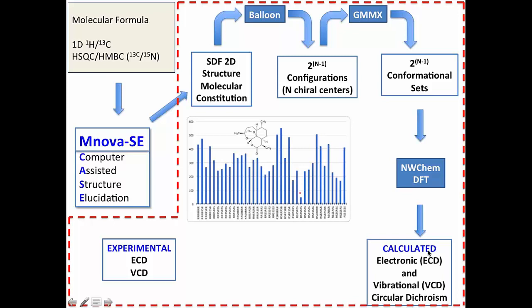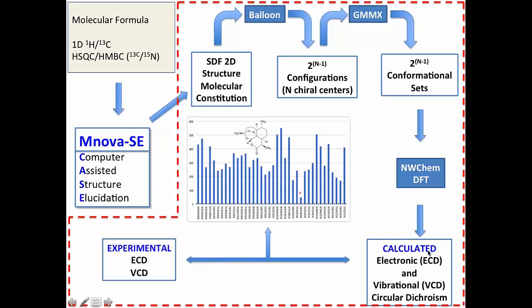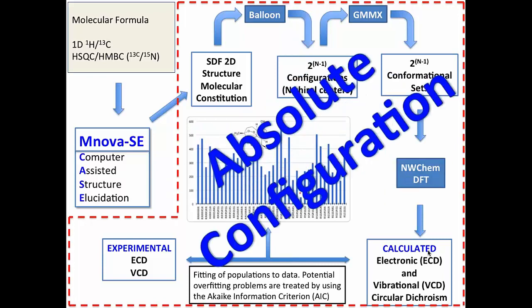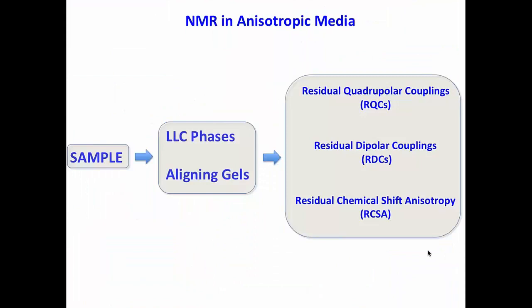And also, we are planning for the future that we calculate electronic CD or vibrational CD, and then we provide the experimental data performing the same filter in case that we have a chromophore, we can get absolute configuration. So this is coming. I'm really excited about this idea.